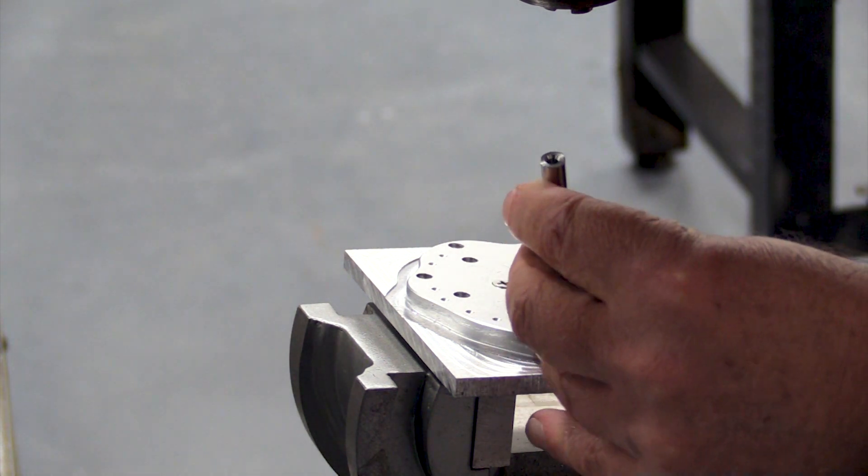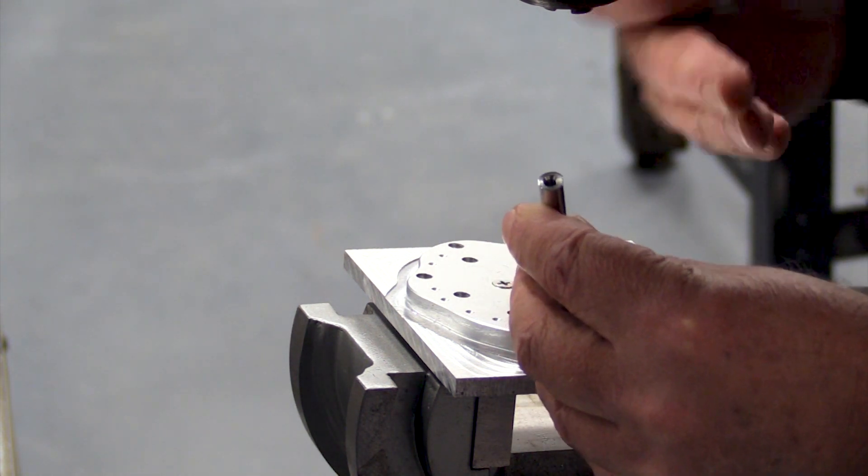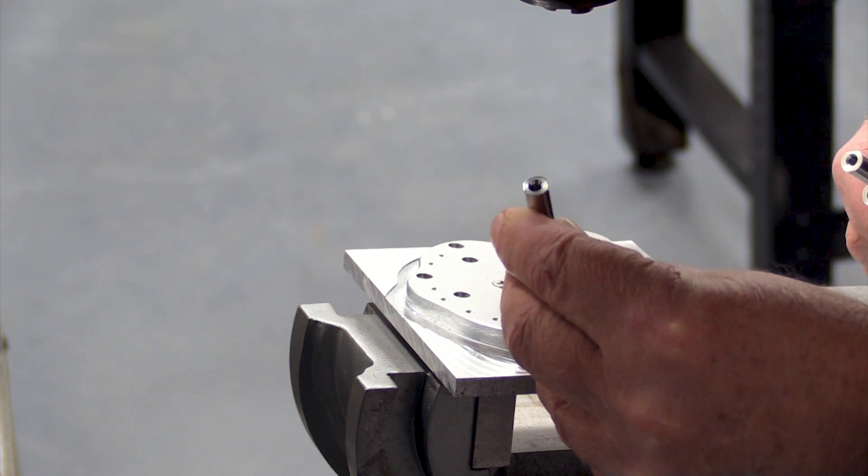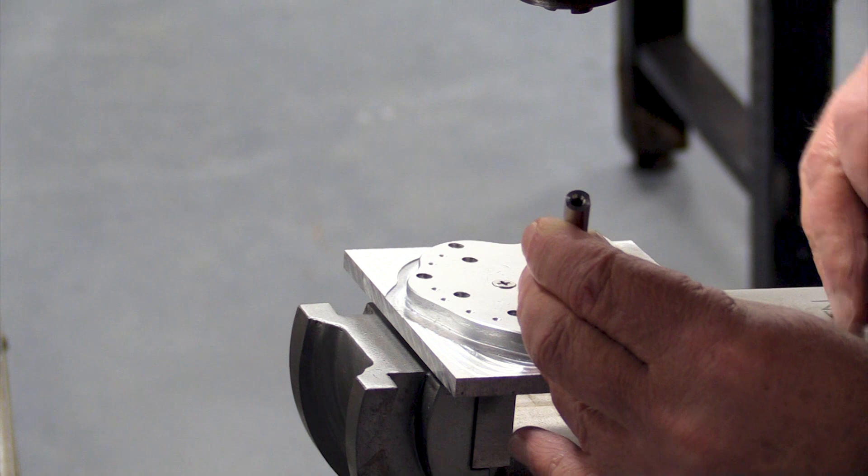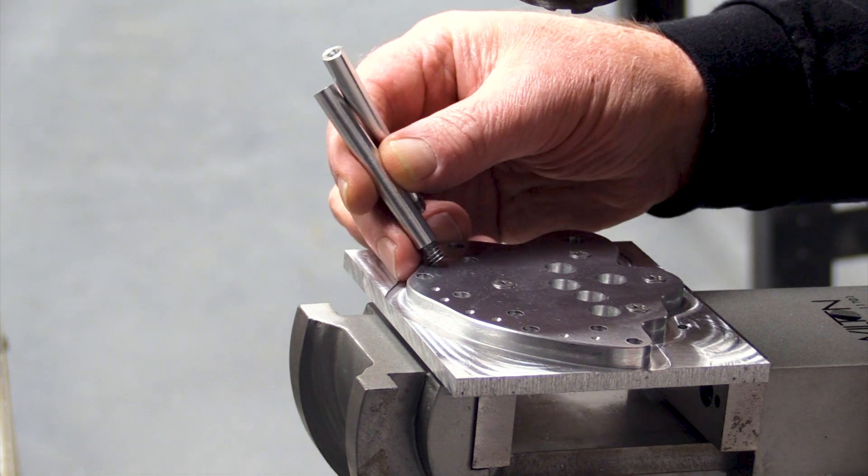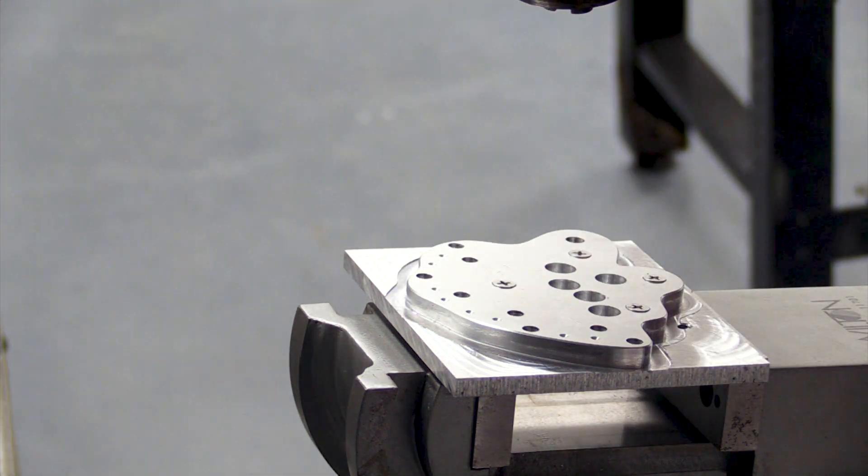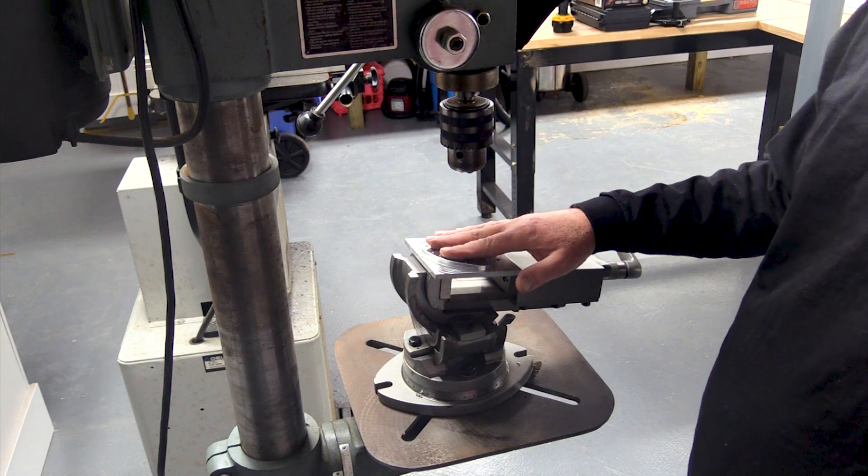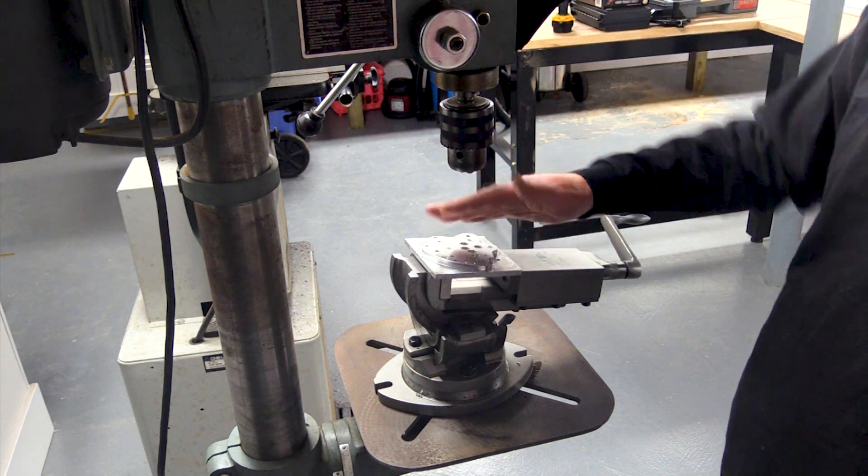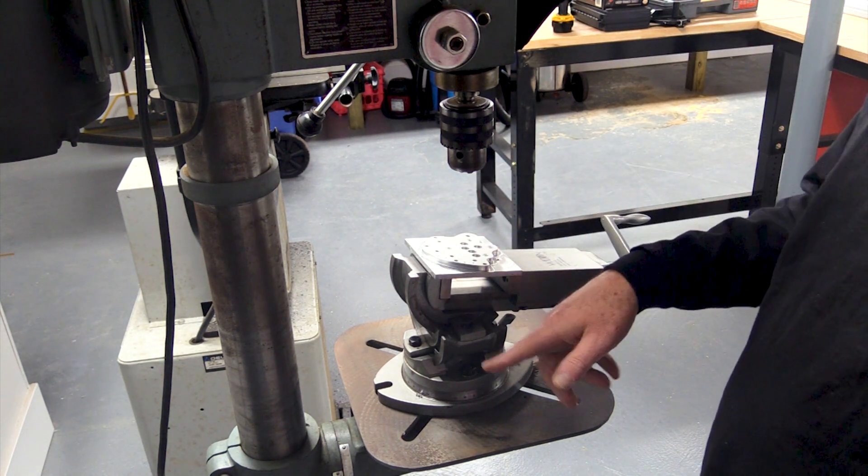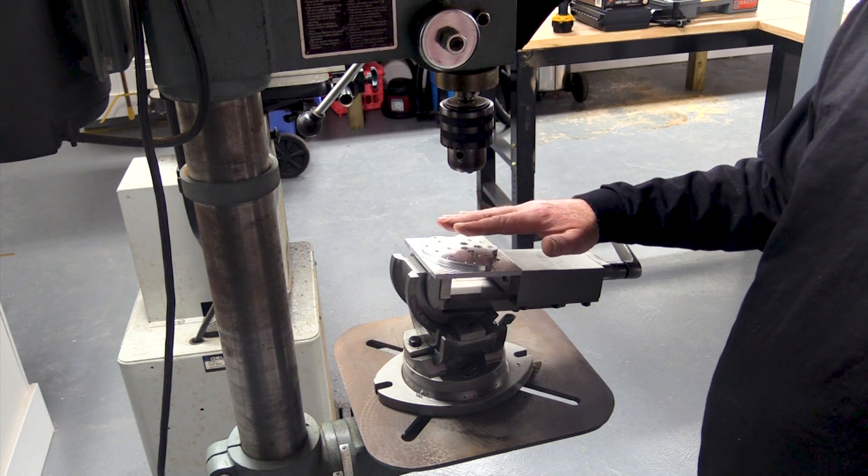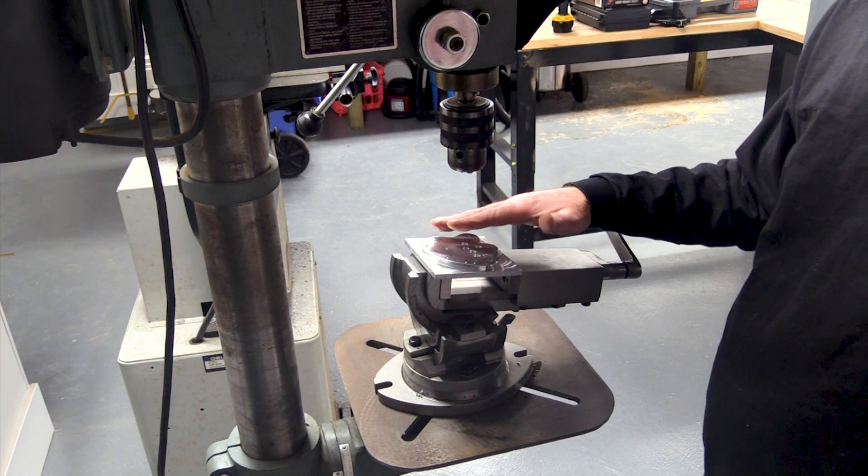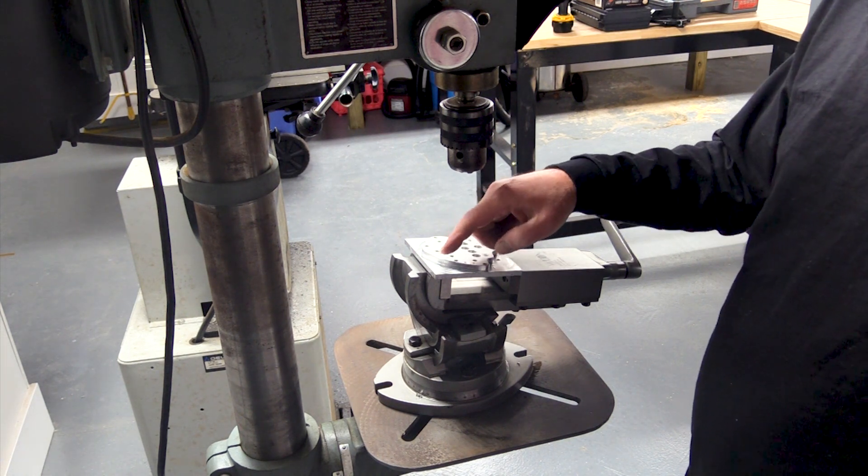So this is a compound angle, back about 8 degrees and over to the side about 5 degrees. The other two fingers are also tilted back 8 degrees, but they are 5 degrees to the opposite way. Now this vise gives me three degrees of freedom, so I can position it any way I want. And right now I've got it tilted back 8 degrees and off to the right 5 degrees.